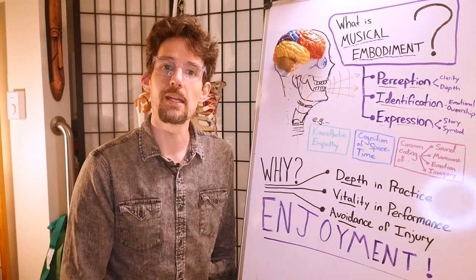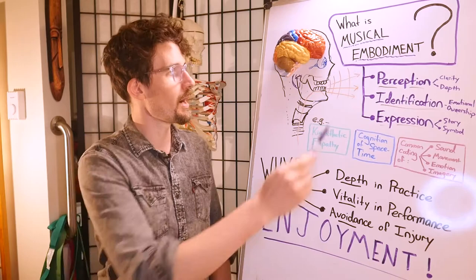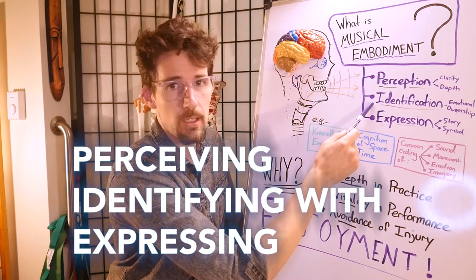So what do we mean by embodiment and how can it help us refine our musical practice? Well, from the perspective of brain science and functional anatomy, we can call embodiment the skill of perceiving, identifying with, and expressing the state of the body in the present moment.